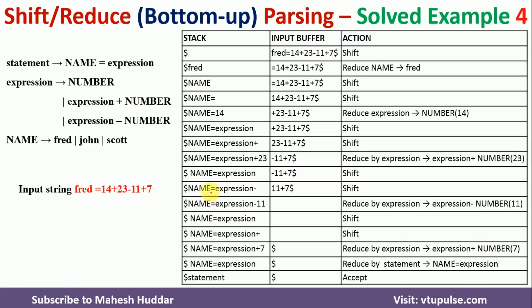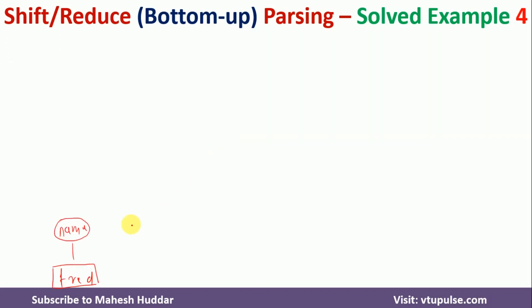Next, equals was shifted and then 14 was shifted. 14 is a terminal symbol shown in a square bracket. 14 was reduced to expression, which is a non-terminal node shown in a circle above it.